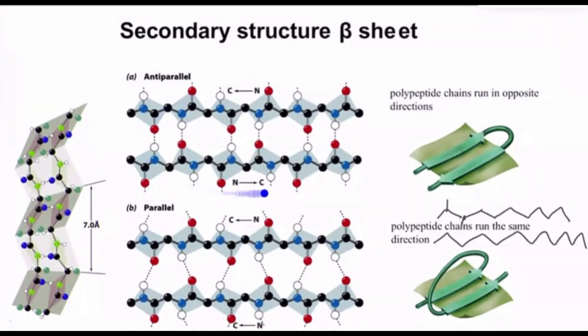While in the anti-parallel beta pleated sheets, neighboring strands run in the opposite direction. Their structure runs in the opposite direction — that's why we call them anti-parallel.